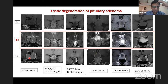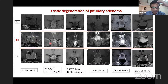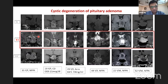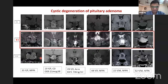Tumors also undergo cystic degeneration over time, best recognized on T2 images in various functional and non-functional tumors. Patterns include micromulticystic, larger multiple cysts, coalescent single cystic appearance, superior or central cystic components, or most of the tumor becoming cystic. On T1, this is a mirror image, with hypoenhancing areas on contrast.